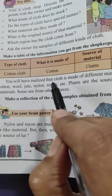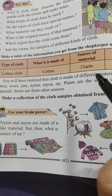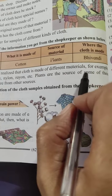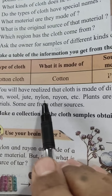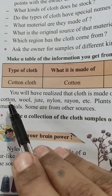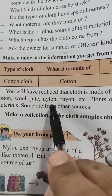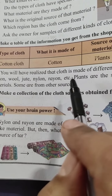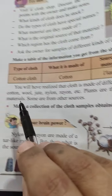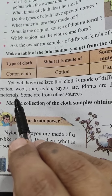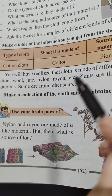You will have realized that cloth is made of different materials. For example: cotton, wool, jute, nylon, rayon. Plants are the source of some of these materials. Some come from other sources.